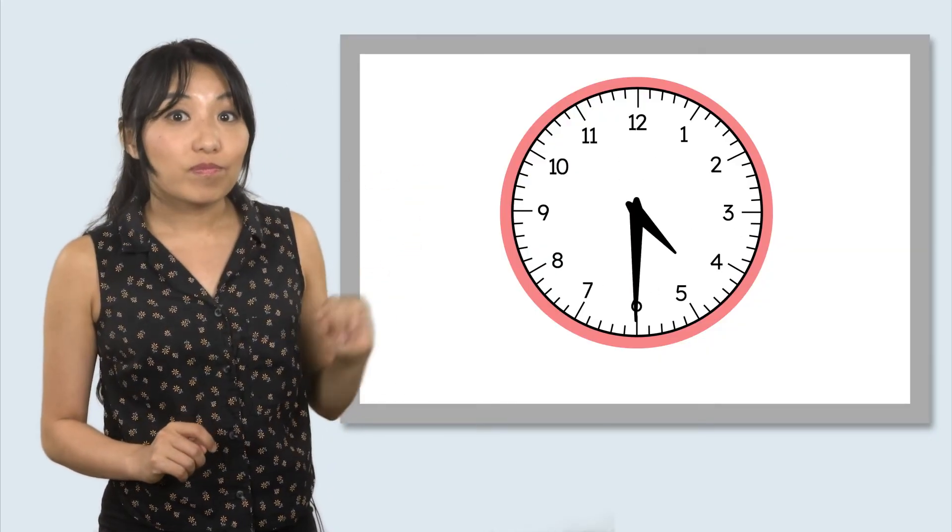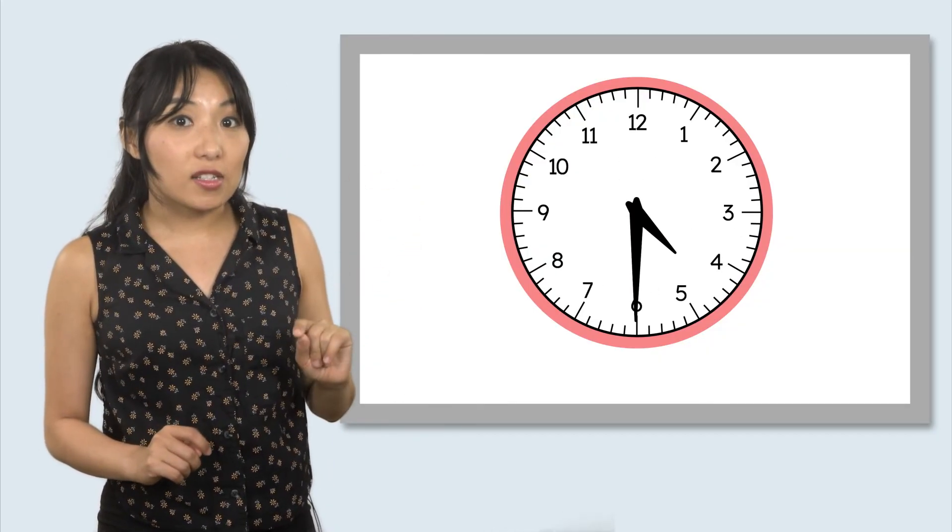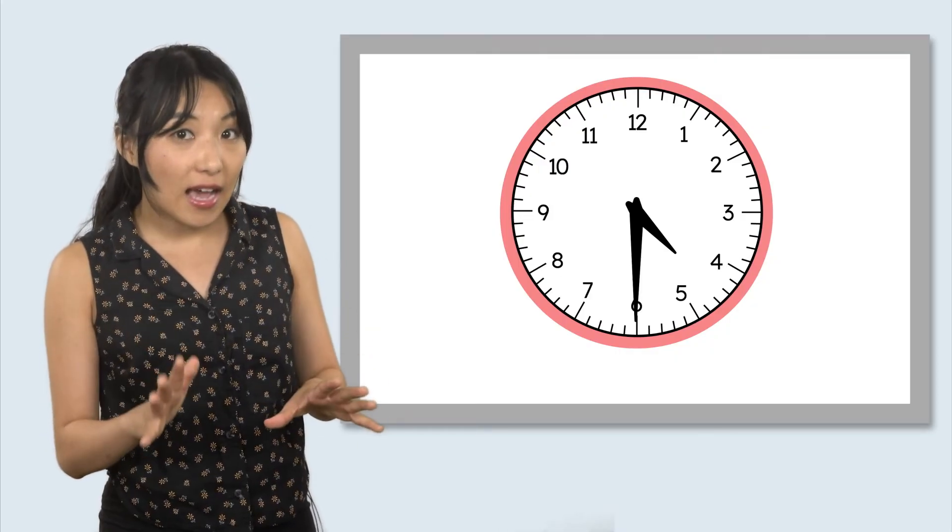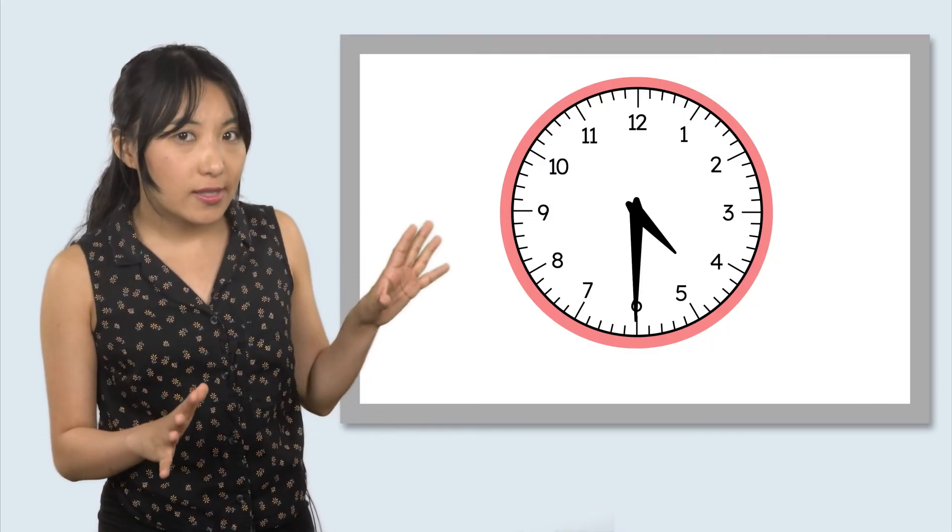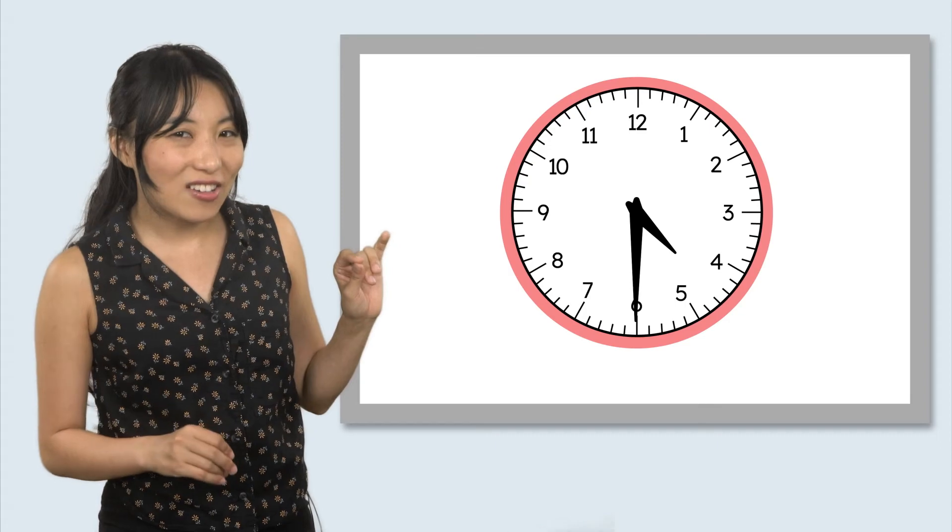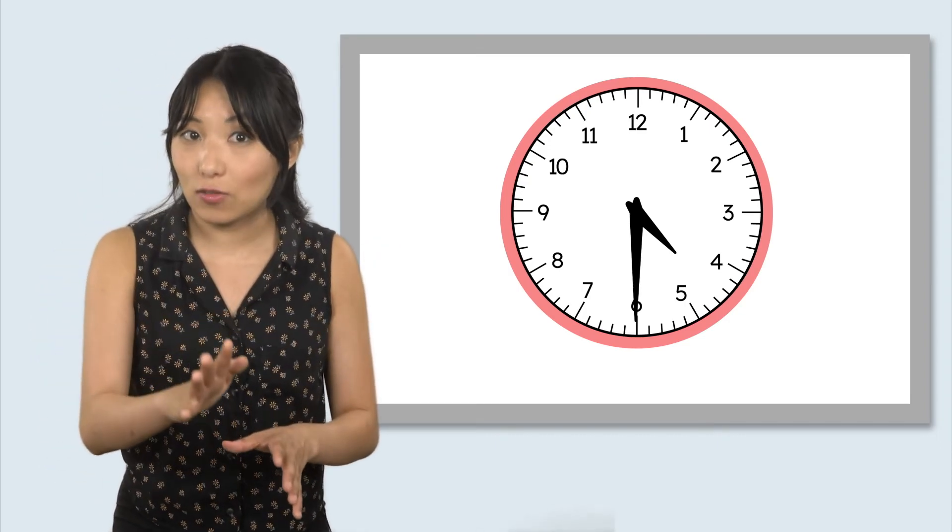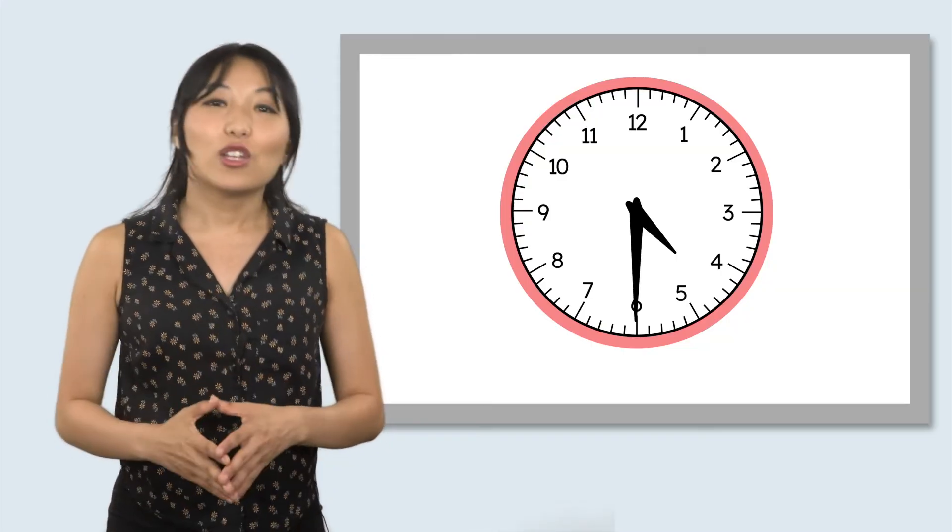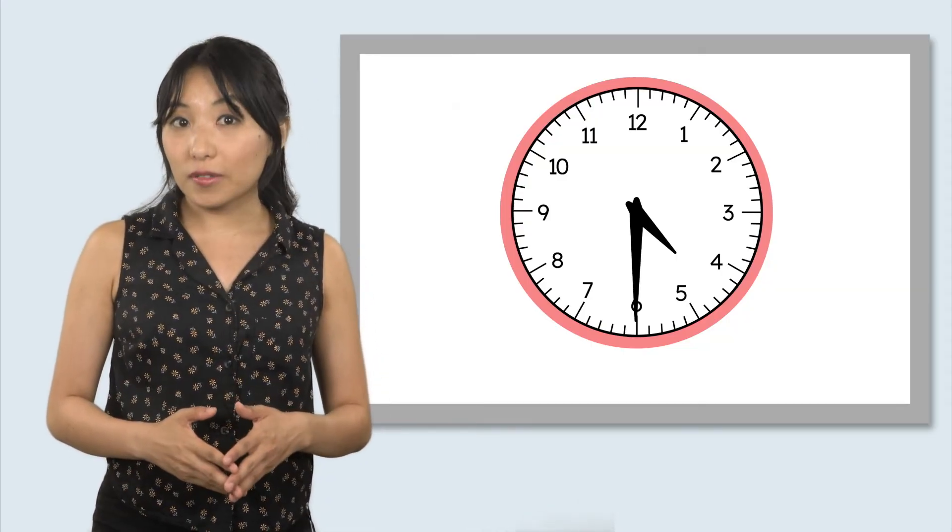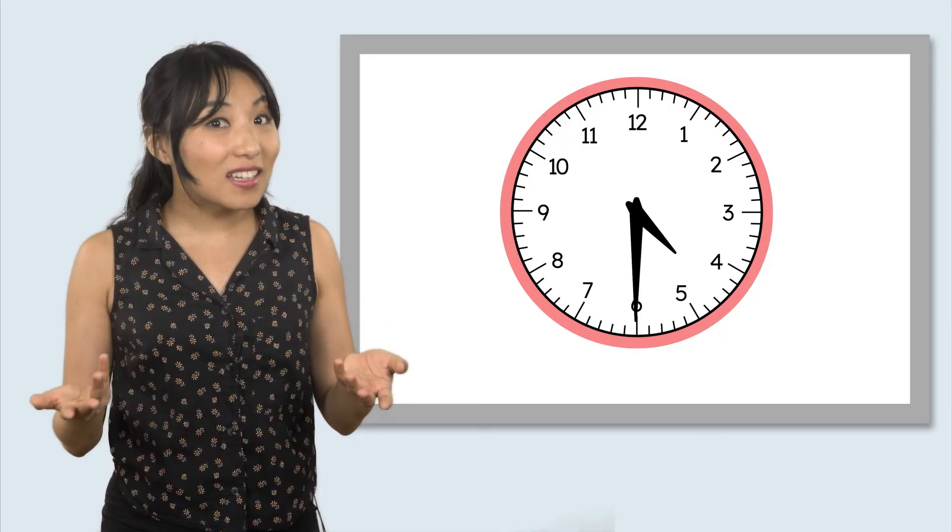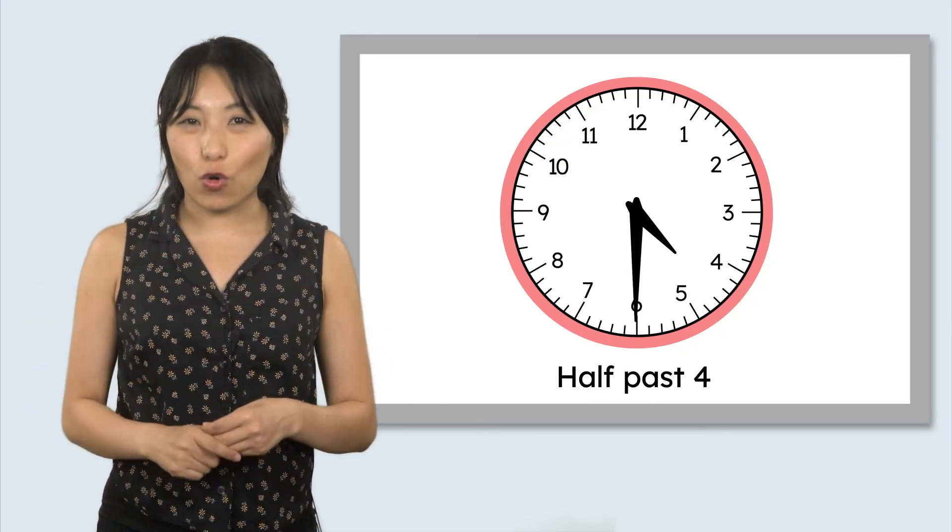Look at this clock. The minute hand is on the 6, so we know it's half past the hour, but which hour is it? Let's check the hour hand. It's between the 4 and the 5, but it hasn't reached 5 o'clock yet. So, the hour is still 4. That means the time must be half past 4.